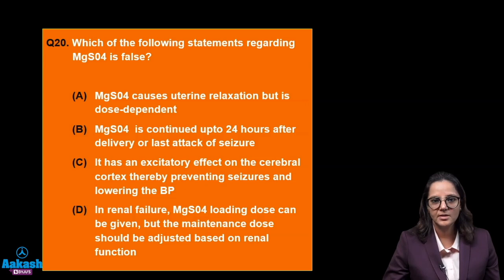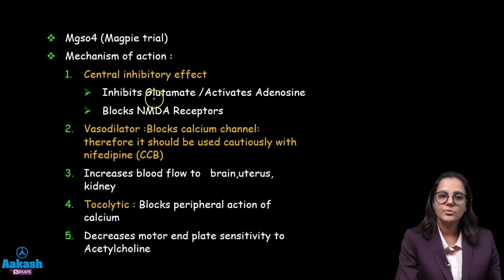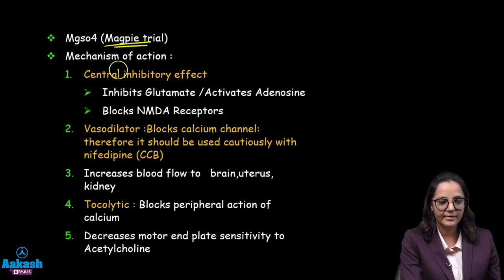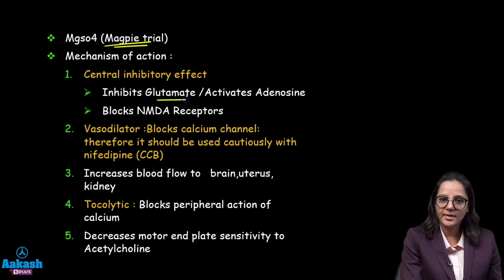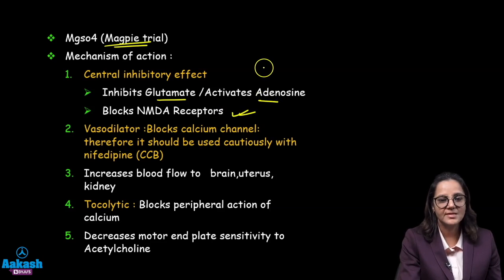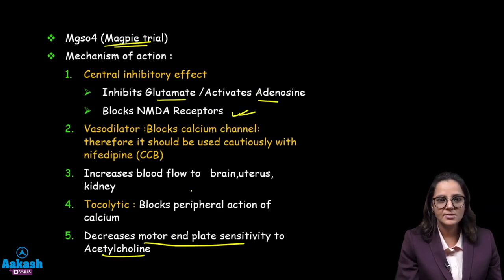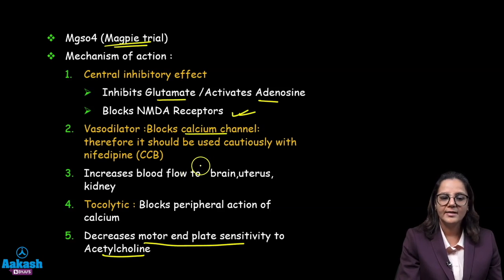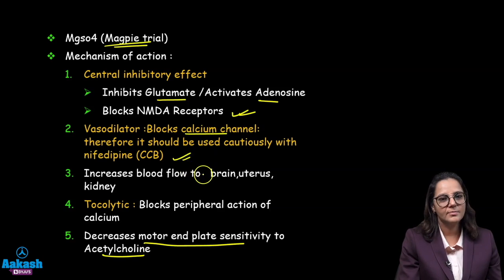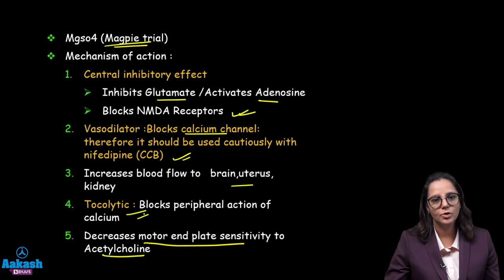Which of the following is false regarding magnesium sulphate? Magnesium sulphate was validated by the MAGPIE trial. Its mechanism of action is a central inhibitory effect — it inhibits glutamate, activates adenosine, and blocks NMDA receptors. It decreases motor end-plate sensitivity to acetylcholine. It is also a vasodilator — it blocks the calcium channel and therefore cannot be given with other calcium channel blockers like nifedipine. It increases blood flow to the brain, uterus, and kidneys, and is also a mild tocolytic.